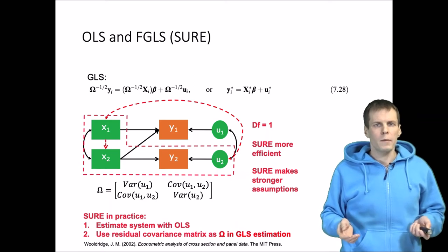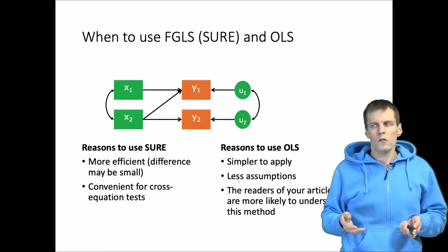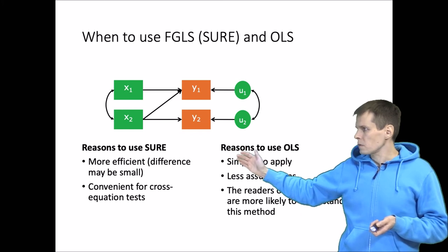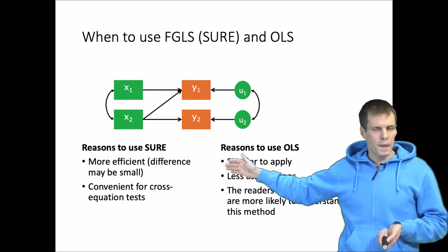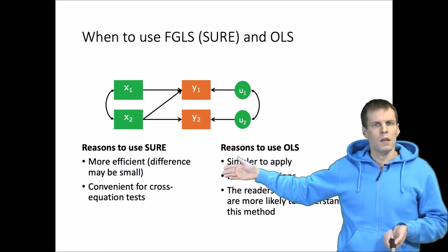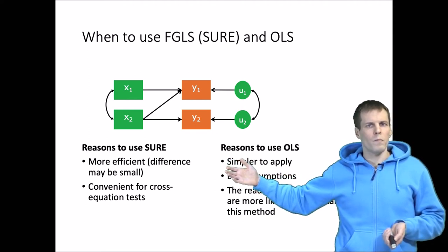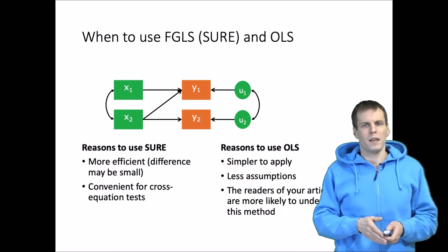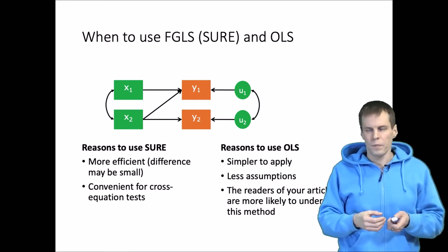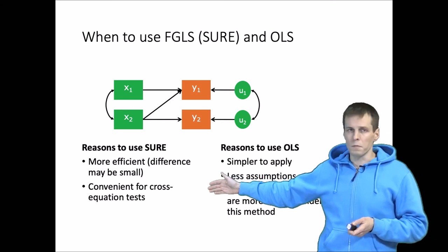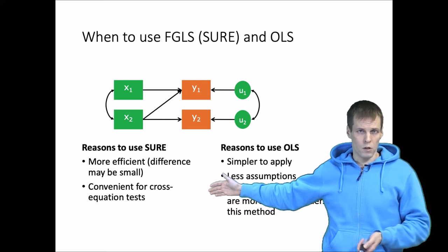So when should this technique be applied and when should OLS estimation be applied instead? There are a couple of reasons for using seemingly unrelated regressions. It is more efficient, but the difference may not always be that large. And if you have a large sample size, OLS regression is probably going to be efficient enough anyway. It's probably not a good trade-off to make additional assumptions and then gain a bit more efficiency if you are efficient enough already. Another reason to use this technique is that it allows you to do cross-equation tests post-estimation conveniently.